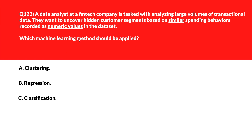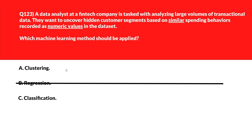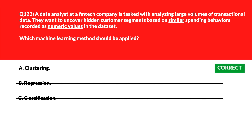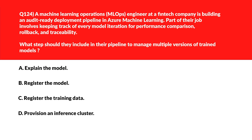Option B is Regression — regression predicts continuous outcomes but doesn't group rows based on value similarity, so it's incorrect. Option C is Classification — classification uses labeled data to assign categories rather than uncovering value-based groupings, also incorrect. We'll lock option A, Clustering, as the right answer.